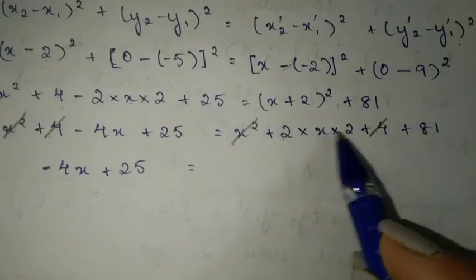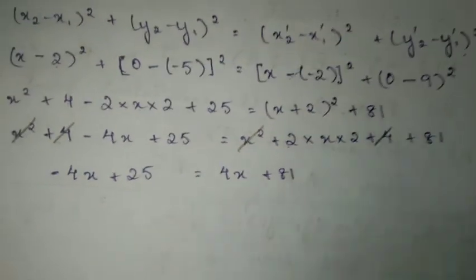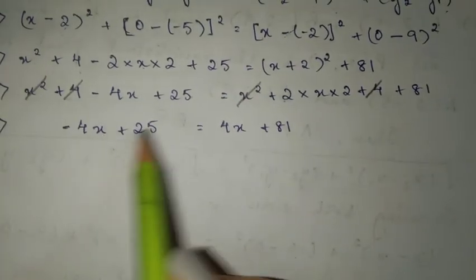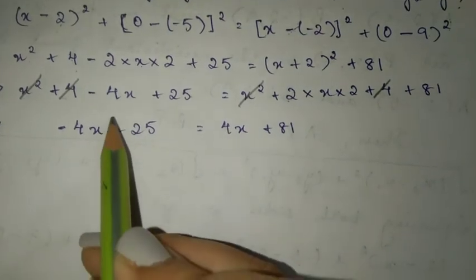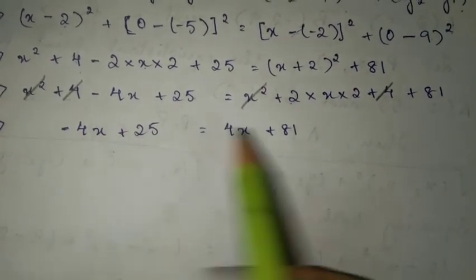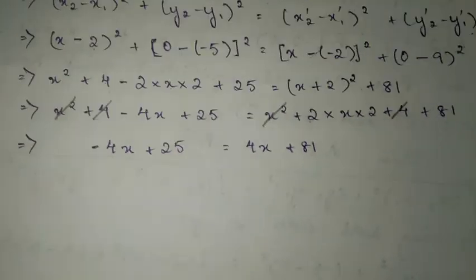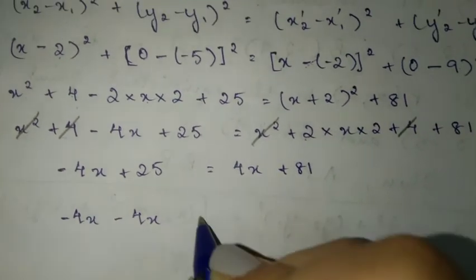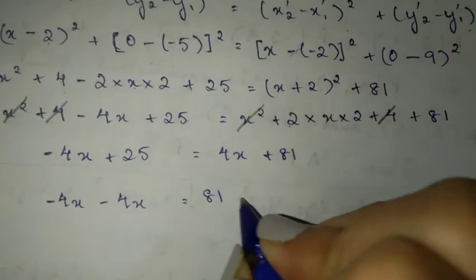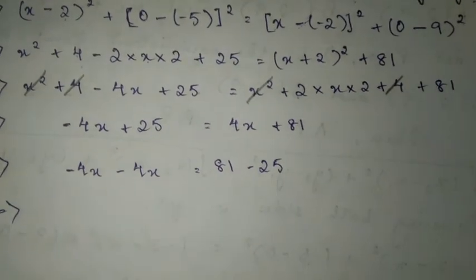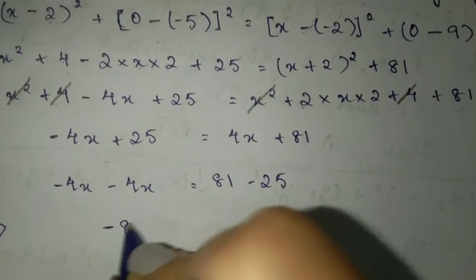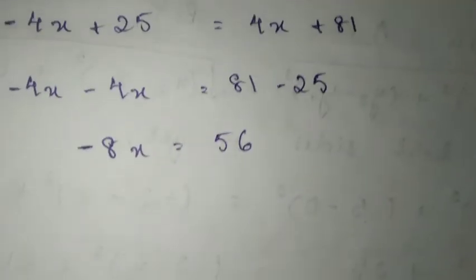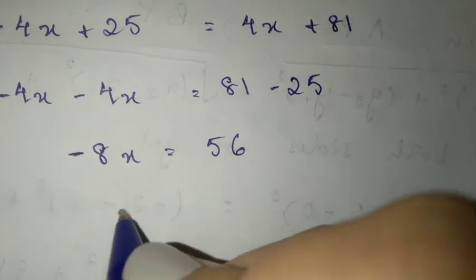4x and 4x cancel. We get minus 4x plus 25 equals 4x plus 81. Let's solve: minus 4x minus 4x is minus 8x, and 81 minus 25 gives you 56.